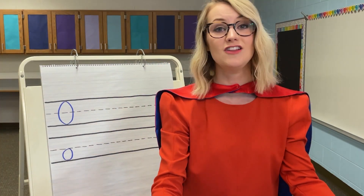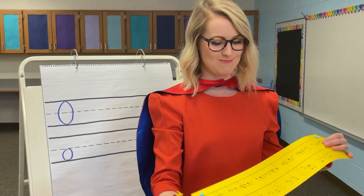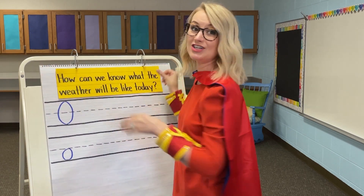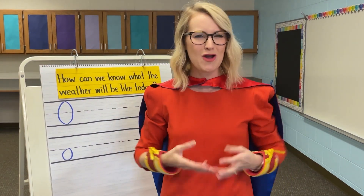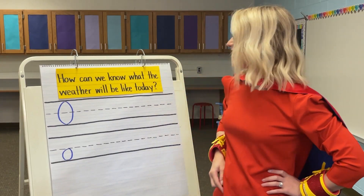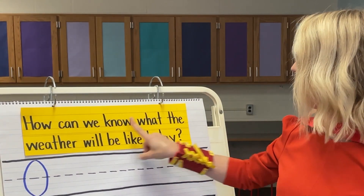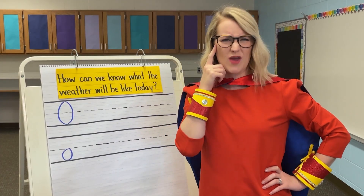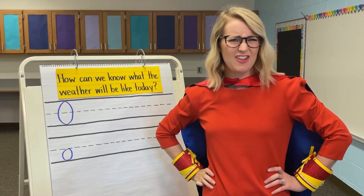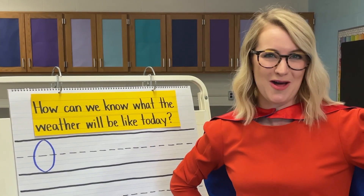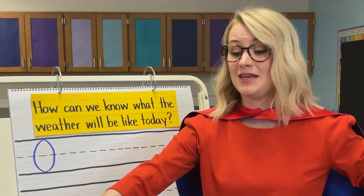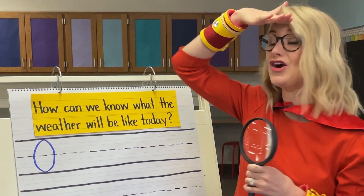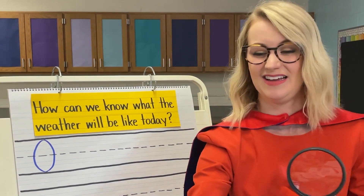Now we're going to practice finding the letter O in a question. I'm going to ask you a question to get your brain ready about what we're going to learn today — it's all about predicting the weather, or knowing what the weather is going to be like. Our question today is: how can we know what the weather will be like today? Can you think of some ways to predict that? We're going to learn about it later by reading a book, but for now I'm going to get out my handy dandy magnifying glass and we're going to search for the letter O in this sentence. Are you ready? All right, great.